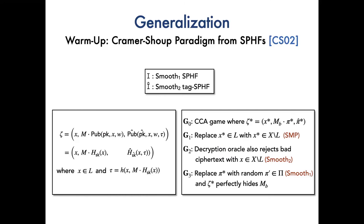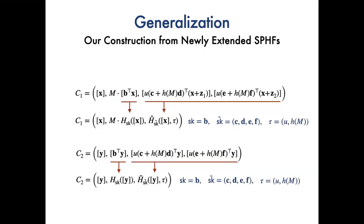In game 2, the decryption oracle also rejects all the bad ciphertexts with non-language element X by the smooth two property of SPHF i hat. In game 3, we can replace pi star with random hash value from set Pi by the smooth one property of SPHF i. Now, the challenge ciphertext zeta star perfectly hides M_B, which yields the CCA security.